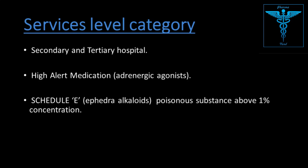Service level category: secondary and tertiary hospital — it is mostly used in secondary and tertiary hospitals. High alert medication: adrenergic agonist — it is also classified as a high alert medication. Schedule E, as ephedrine belongs to alkaloids which are poisonous substances given above 1% concentration. It is mentioned in the Punjab Drug Act; Punjab Drug Rules 2007 lists it in Schedule D, so it should be kept under lock as it is a poisonous substance.